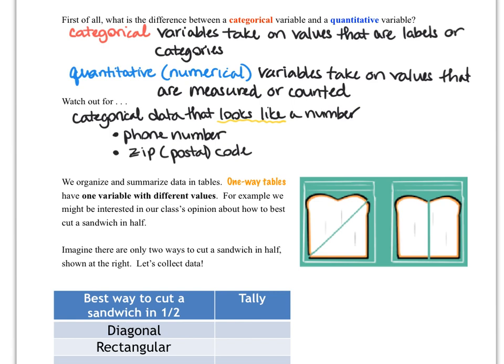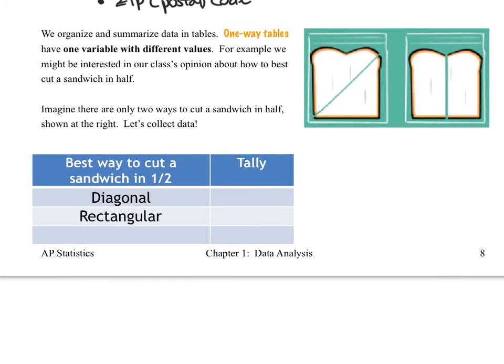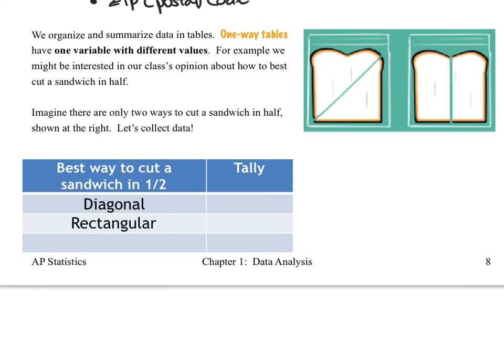All right, let's take a look at a one-way table. We know that we love to organize data into tables and one-way tables are called one-way tables because they specifically have only one variable. And in this case, you see the little sandwich picture. If we're interested in what our class thinks about how we can best cut a sandwich in half, we might take a survey, for example. So imagine that there are only two ways to cut a sandwich in half. If they are shown at the right, we can collect some data from our class.